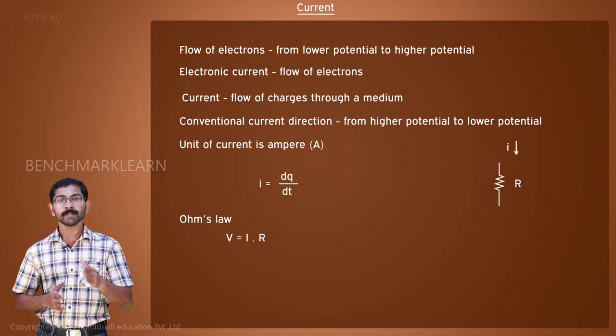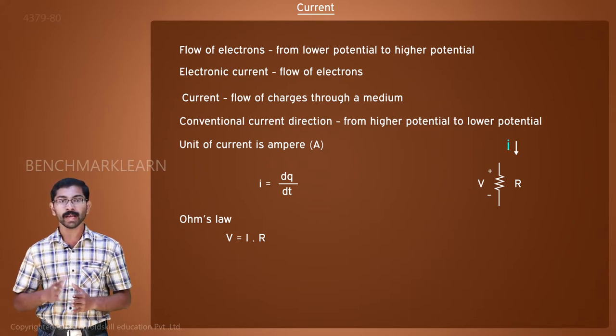When a current is passed through a resistor, then a voltage appears across it. Here, current is the cause and voltage is the effect. But both these situations obey Ohm's law.